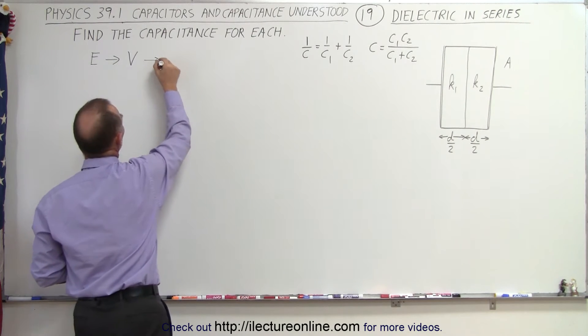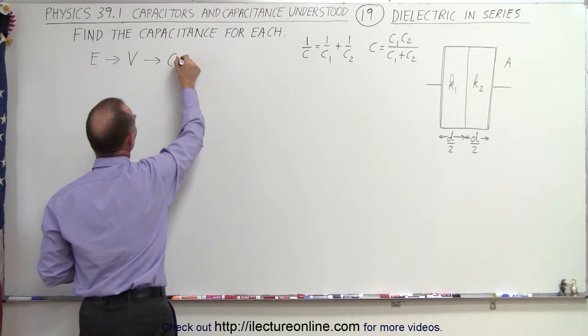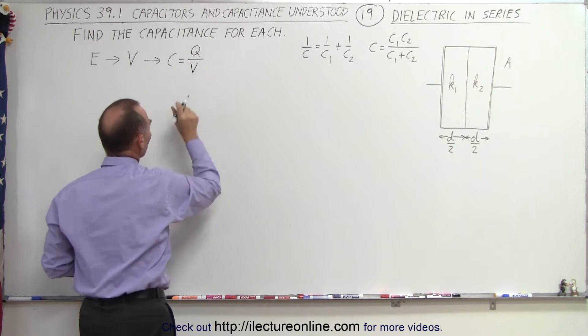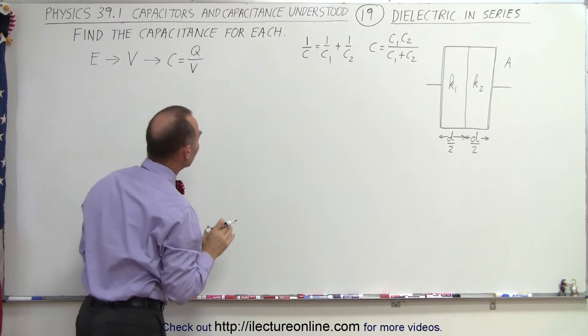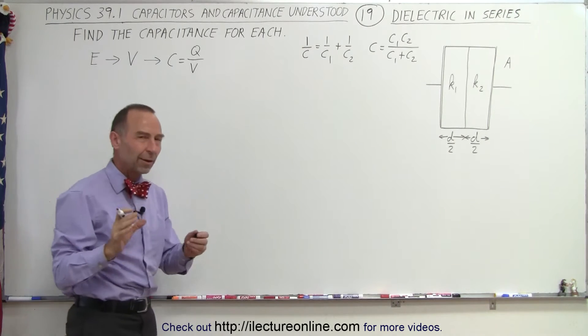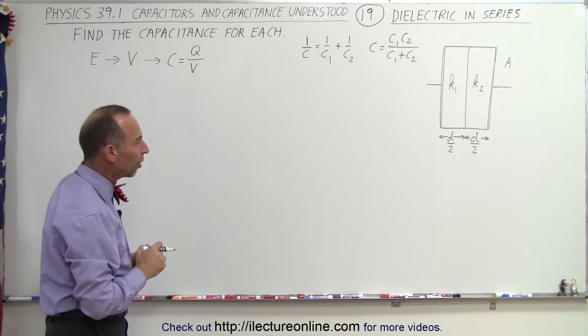And then the plan is to express the capacitance in terms of the charge divided by the voltage for each piece. And so you can see that once we have that for one and two, we can then plug it into the equation. So that's the way we want to solve this.